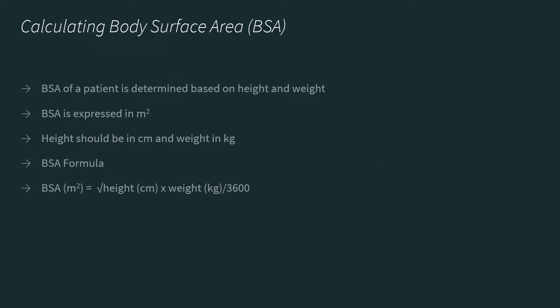The BSA of a patient is determined based on height and weight. The BSA is usually expressed in meter square. The height in the equation should be in centimeter, and the weight should be in kilogram. So the formula for BSA is: BSA in meter square equals the square root of height in centimeter times weight in kilogram divided by 3,600.